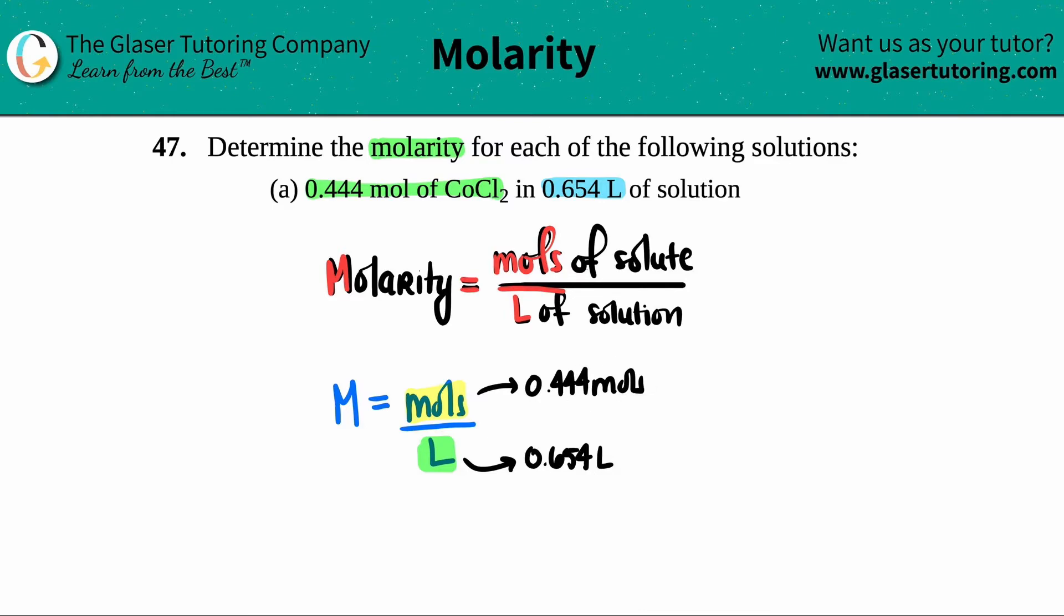So I'm just going to plug it in. We have capital M molarity equals 0.444 divided by 0.654, and now just calculate it out. Capital M equals - let me calc out - we have 0.444 divided by 0.654.